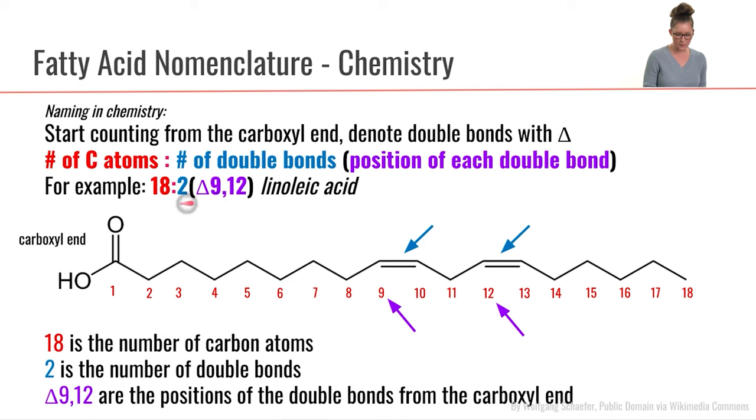If we were naming this exact same fatty acid using the chemistry nomenclature, we would still have 18 carbons in it. But this time we're saying that carbon number one is over here on the carboxyl end. We still have two double bonds, so that's the same.